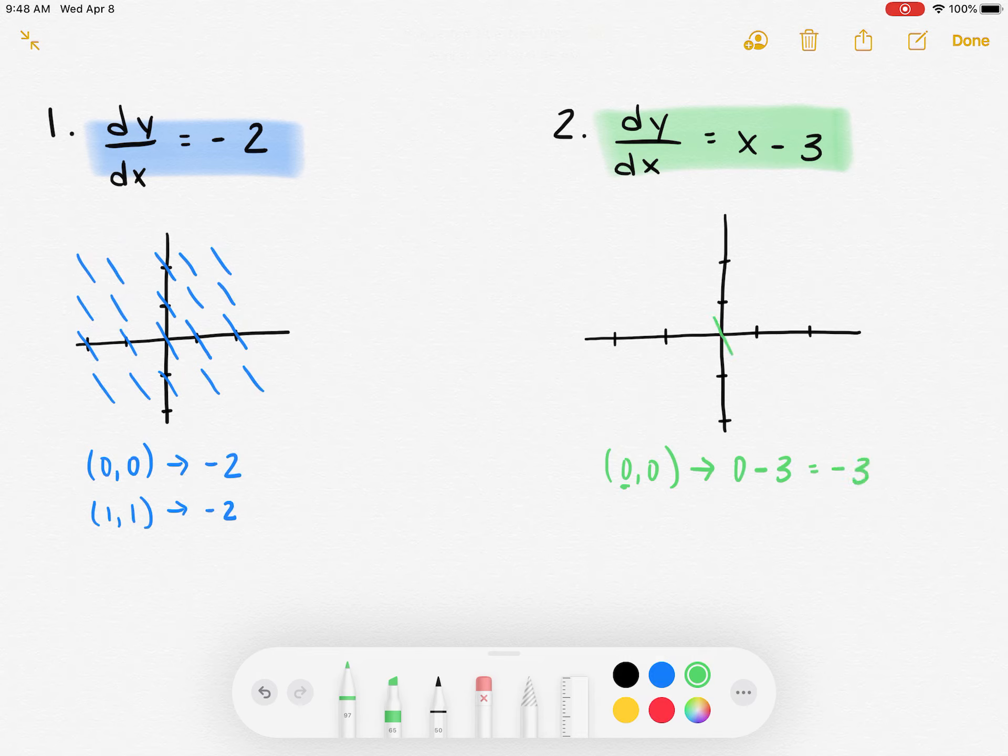So then I go up to (0,0), and I draw a slope of negative 3. That kind of looks like negative 2, so I'm going to make it a little more steep to give me negative 3.